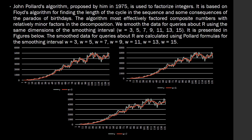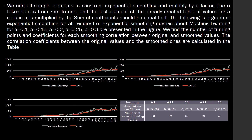We smooth the data for queries about R using the same dimensions for the smoothing interval, each presented in figures below. The smooth data for queries about R are calculated using polar formulas for the smoothing intervals. We add all sample elements to construct exponential smoothing and multiply by a factor. We find the number of turning points and coefficients for each smoothing correlation between the original and smooth values. The correlation coefficients between the original values and the smooth ones are calculated in the table.